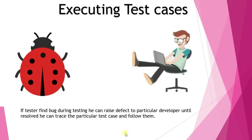Once issues are resolved by the scrum master or team leader, the tester moves on to executing test cases. While executing, if the tester finds a bug or defect, they raise it to the developer and trace that test case until it is resolved. The tester must invest time in identifying whether it is actually a bug or just a confusion, before escalating.